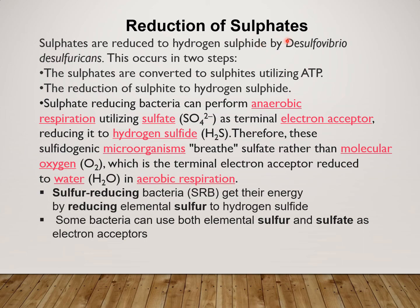In dissimilatory reduction of Sulphate, the Sulphate is reduced to Hydrogen Sulphide by Desulfovibrio. This reduction takes place in two steps: Sulphate is first converted to Sulphite — the difference being SO4 becomes SO3 — and for this conversion energy is required in the form of ATP. The next step is that Sulphite is further reduced to Hydrogen Sulphide.